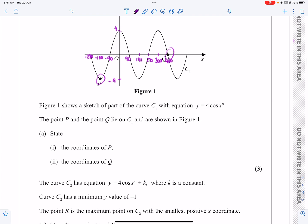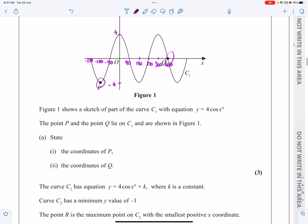The curve C2 has the equation 4 cos x plus K, where K is a constant. Let's just talk about what this does then. This simply takes the whole graph and this time shifts it up by K, by however many units K works out to be. And they're telling me that the minimum value is now going to be minus 1 here.